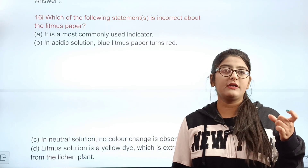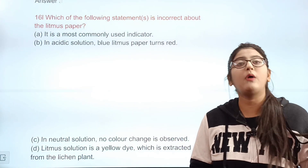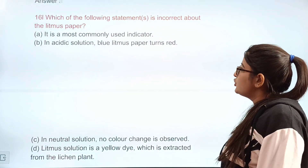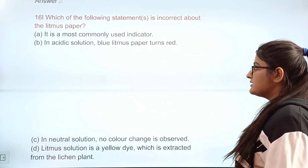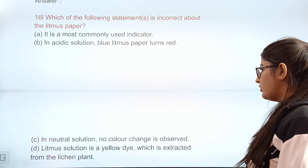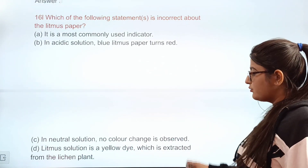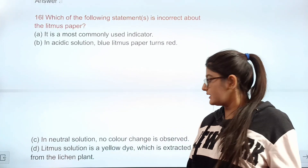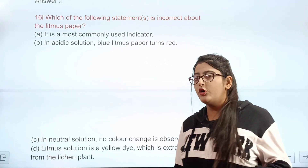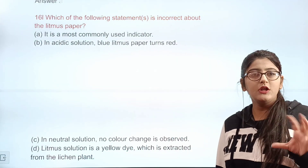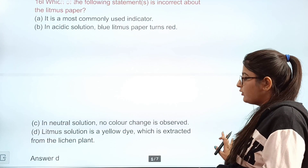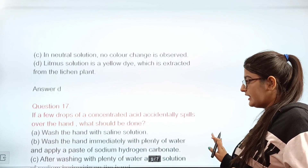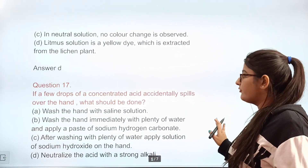Question 16: Which of the following statements is incorrect about litmus paper? A: it is a commonly used indicator — true. B: in acidic solution, blue litmus paper turns red — true. C: in neutral solution, no color change is observed — true. D: litmus solution is a yellow dye extracted from the lichen plant — incorrect. Correct answer: D.